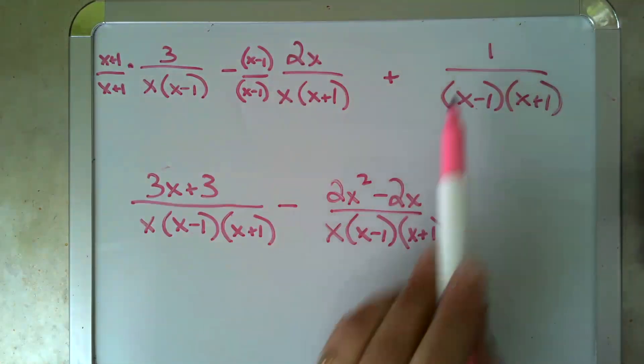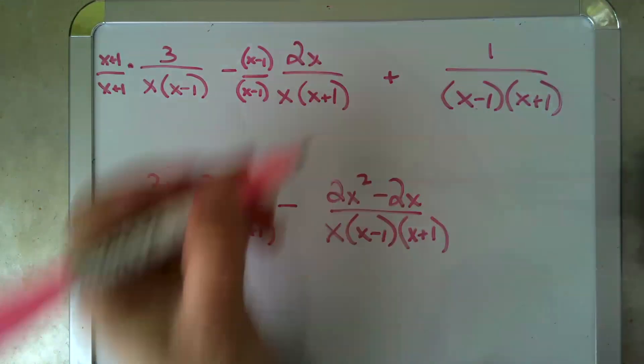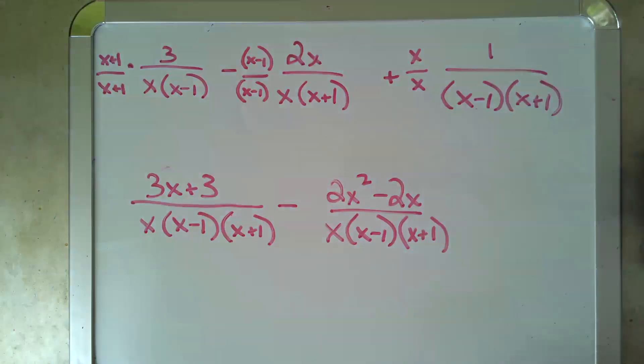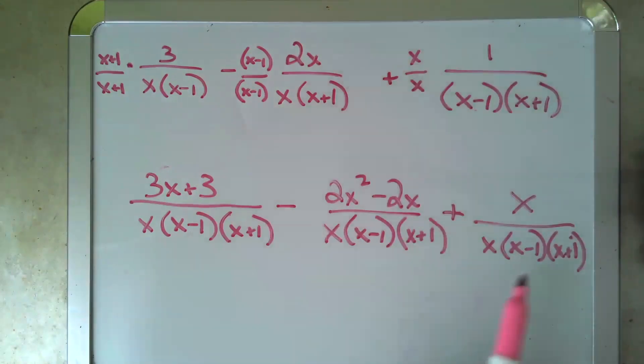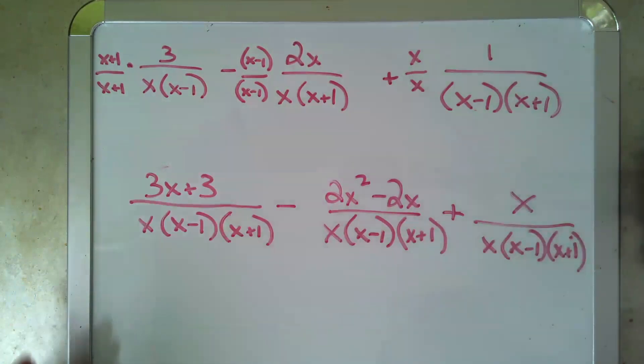and I'm going to do it one more time here. I've got my x minus 1, I've got my x plus 1, I'm missing an x. Multiply top and bottom by x. That's my new version of this. My denominators are the same for all three, which means I can go ahead and add or subtract the numerator.